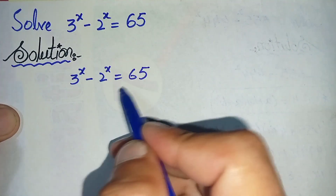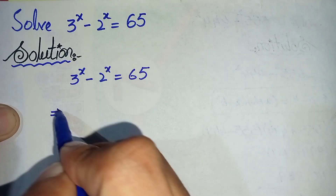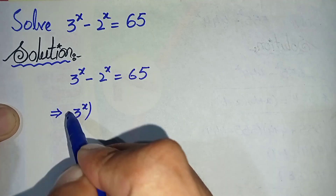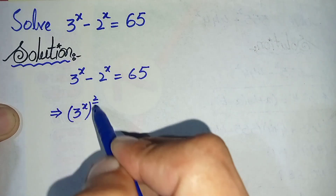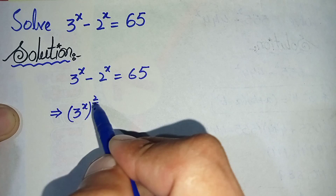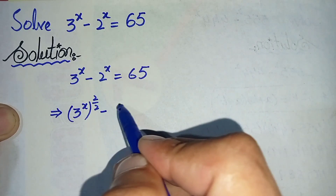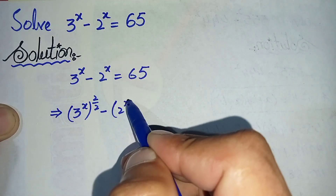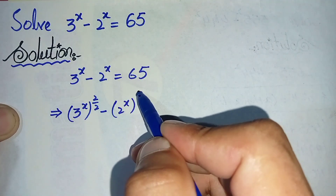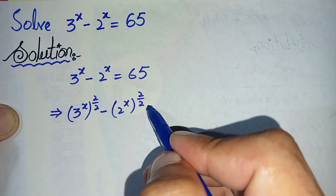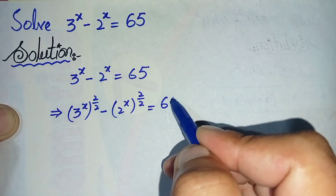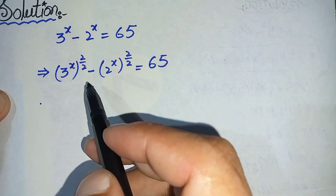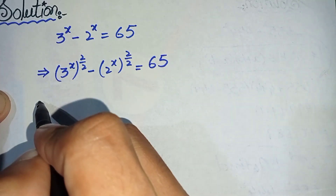In the next step we can write this equation as: 3 raised to power x, whole raised to power 2 divided by 2, minus 2 raised to power x, whole raised to power 2 divided by 2, is equal to 65. We can divide and multiply a number in the power of any number.